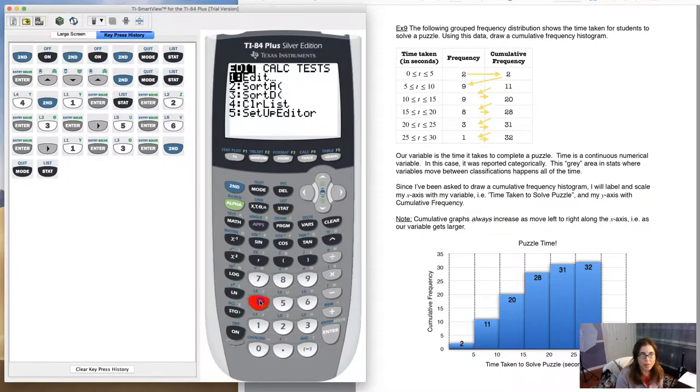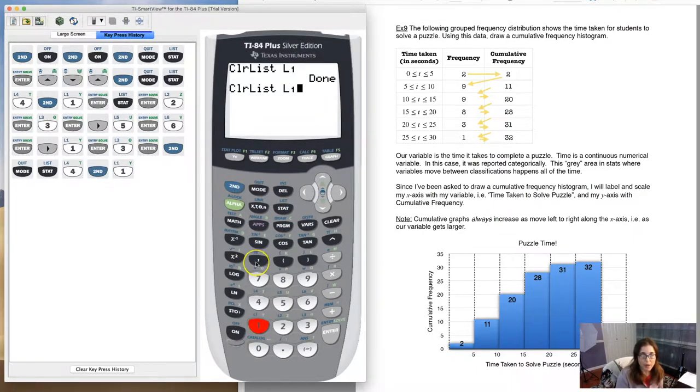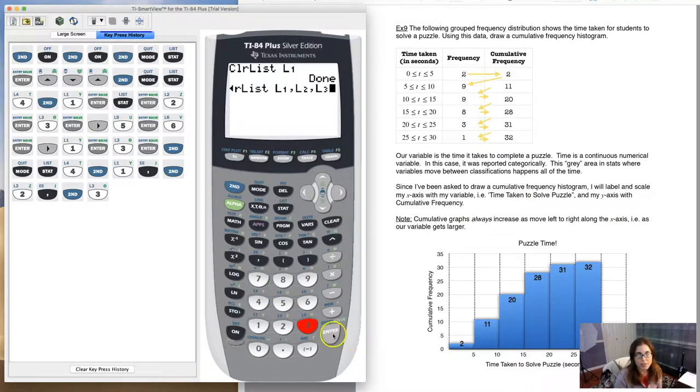Let's say I wanted to clear out all three of those. I'm going to hit stat, option four. I definitely want L1 cleared out, but I would also like L2 and L3. As long as you separate those lists with commas, you're good to go. So I will hit the comma key, which is just above my seven key, and then I will clear out L2, clear out L3. Once I hit enter, it's done. That's one way to clear out lists.